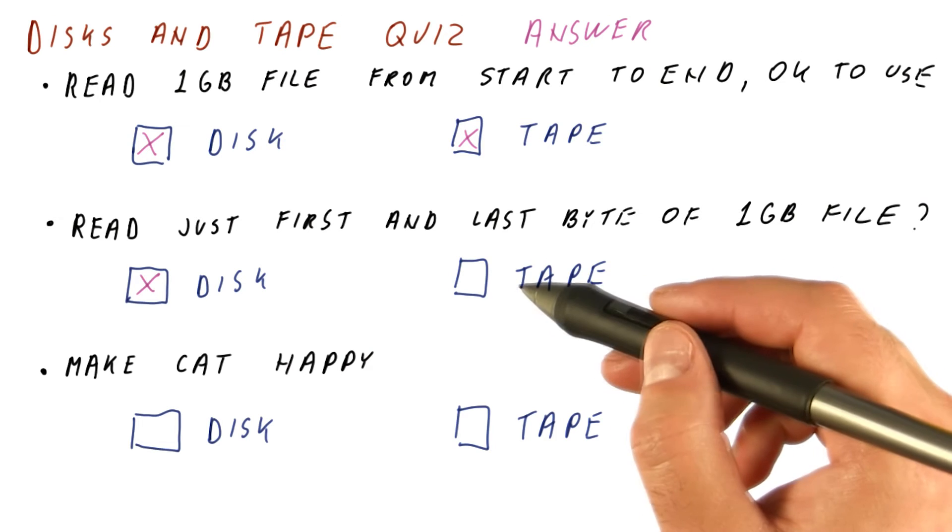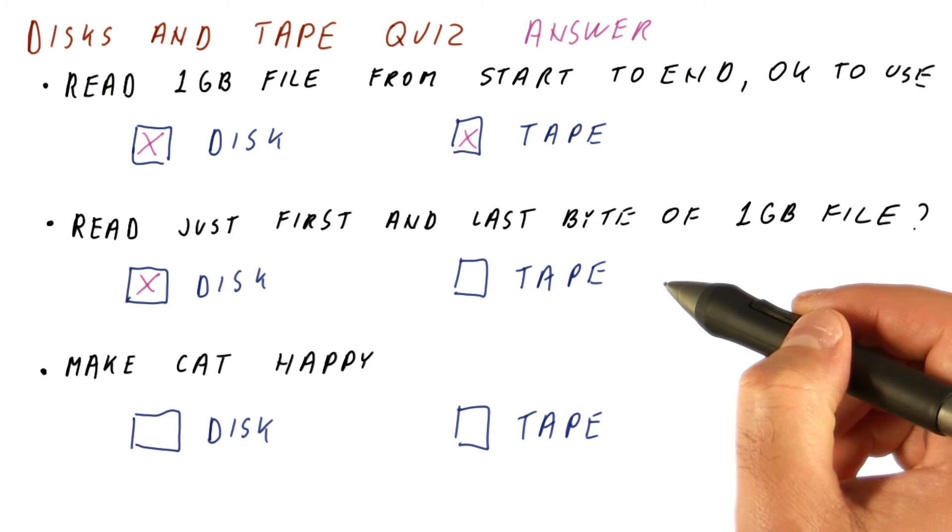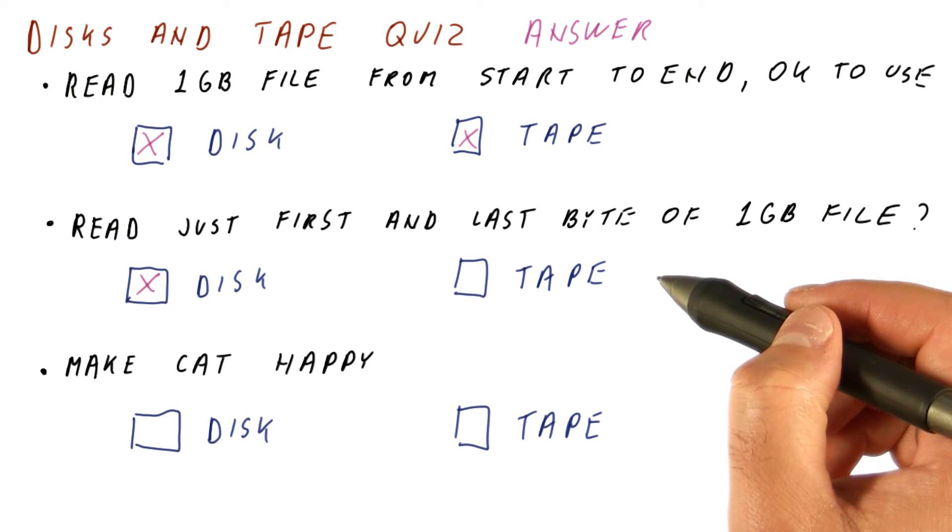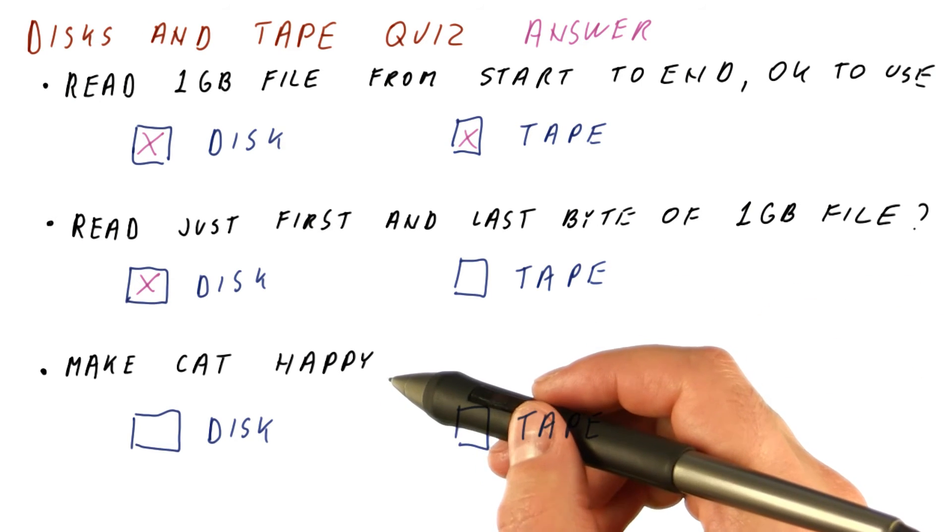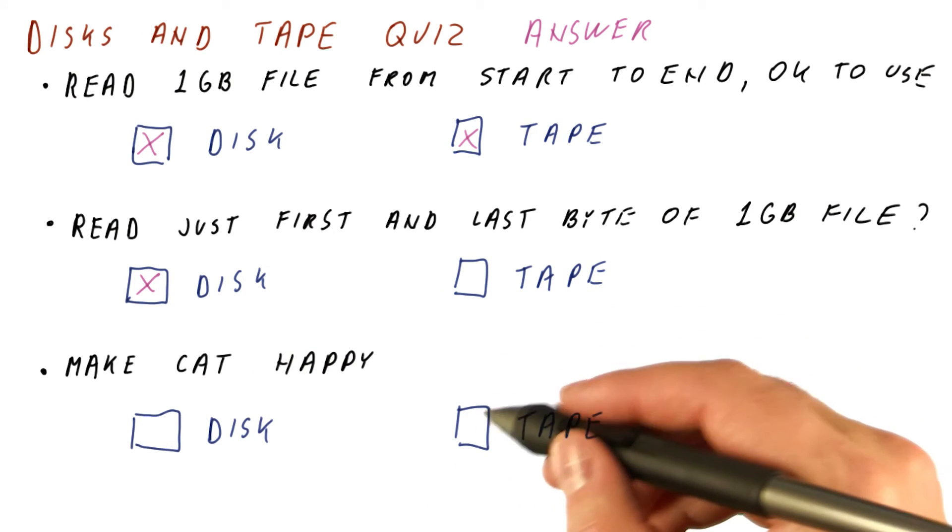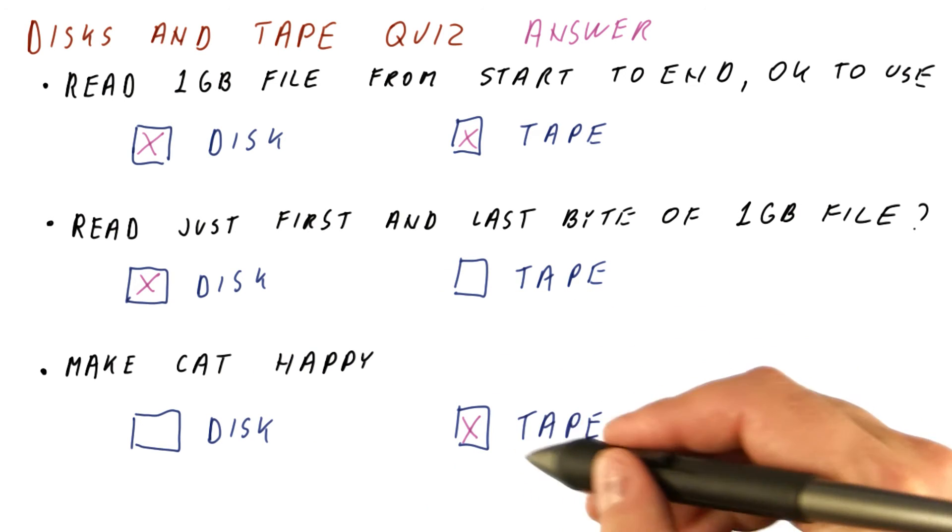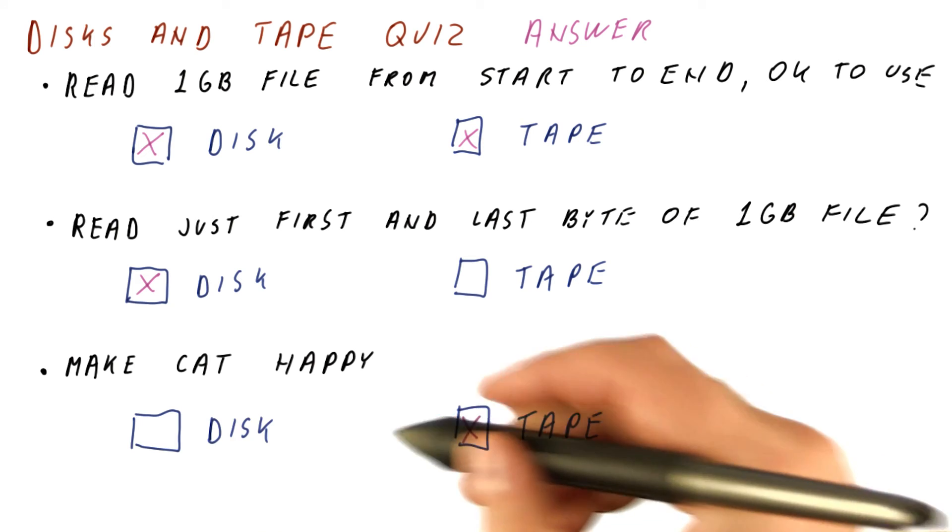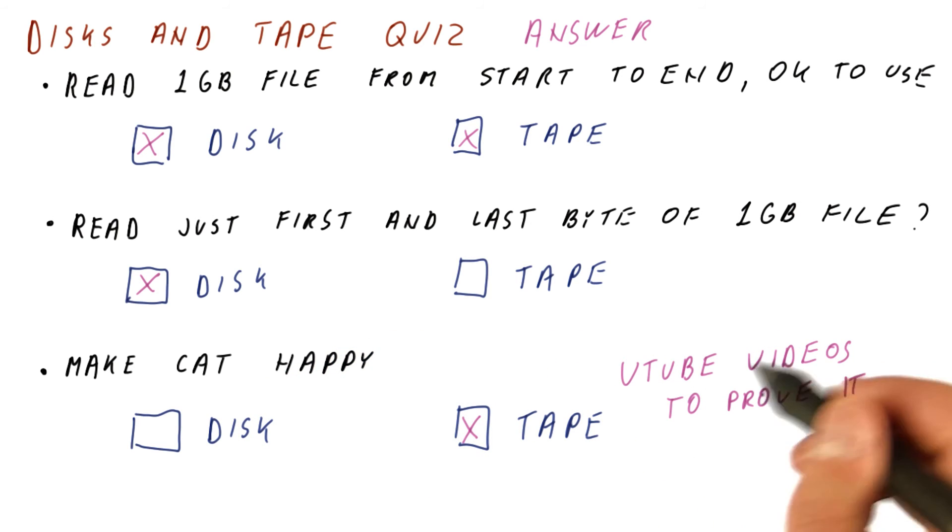With the tape, it takes a lot longer to get to any single position, because we need to really go past all the other positions. And finally, a cat would much rather play with a reel of tape than with a hard drive. And there are thousands of YouTube videos that prove this point.